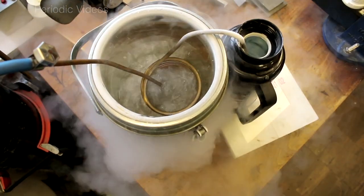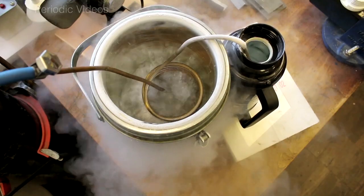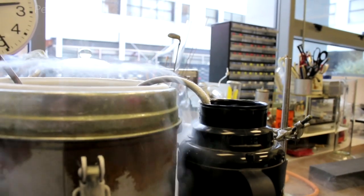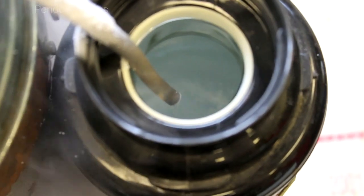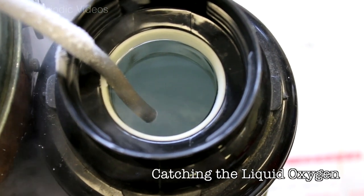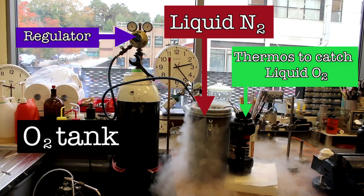In the coil, it liquefies, and when it liquefies, the flowing gas blows through probably droplets or slugs of liquid out of the other side, and then it's fast enough so that it doesn't all boil away when it goes through the last piece of tube, and then it goes into a thermos flask.